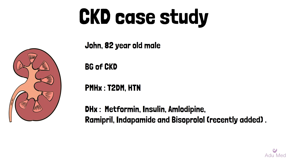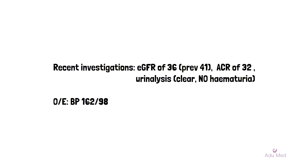John is an 82 year old male with a background of CKD. He presents for an annual review of his condition. In addition to CKD he also has a past medical history of type 2 diabetes and hypertension. He currently takes metformin, insulin, amlodipine, ramipril, indapamide and bisoprolol. Bisoprolol was recently added just four weeks ago to get better control of his blood pressure. Recent investigations have shown an eGFR of 36, previously 41, and an ACR of 32. Urinalysis is clear with no haematuria. On examination today his blood pressure still remains elevated at 162 over 98.